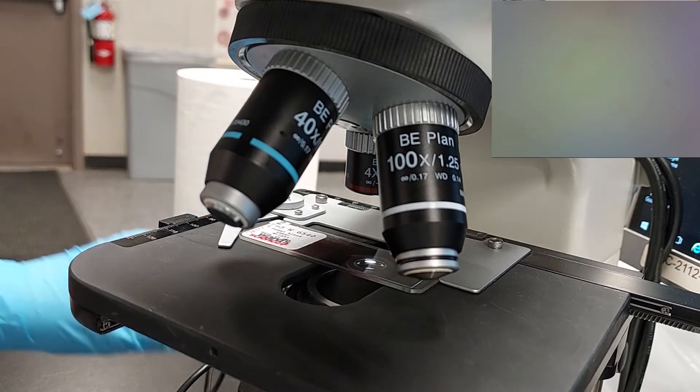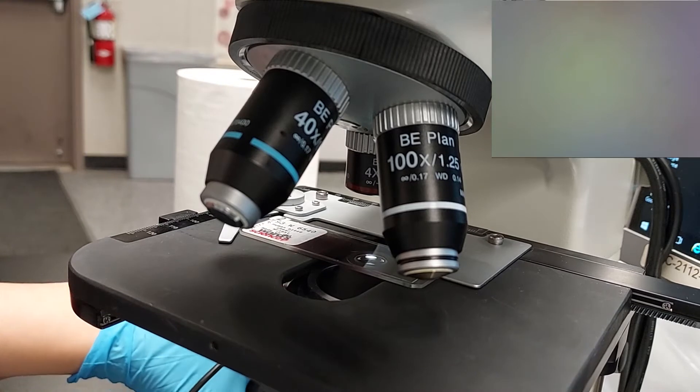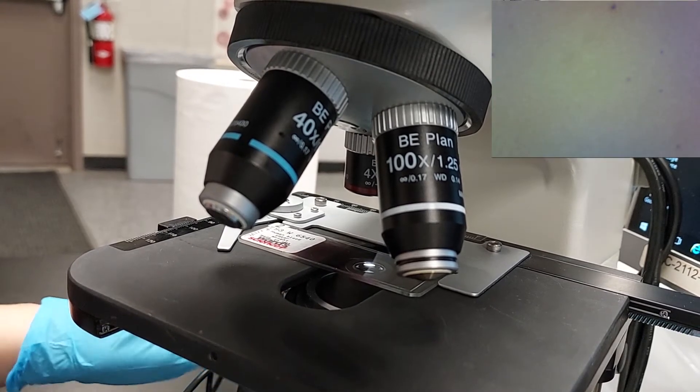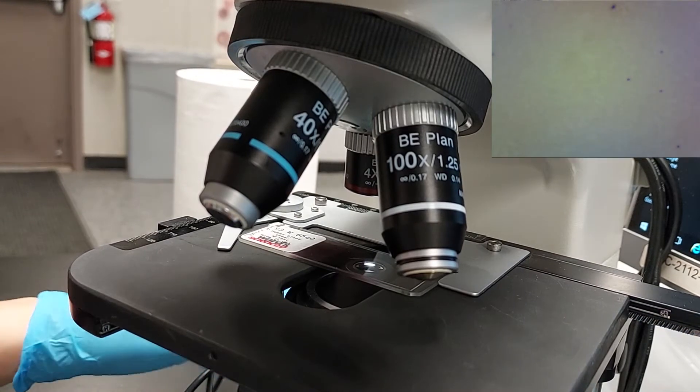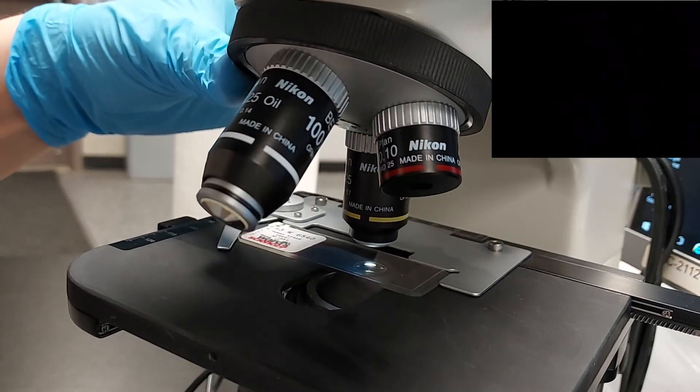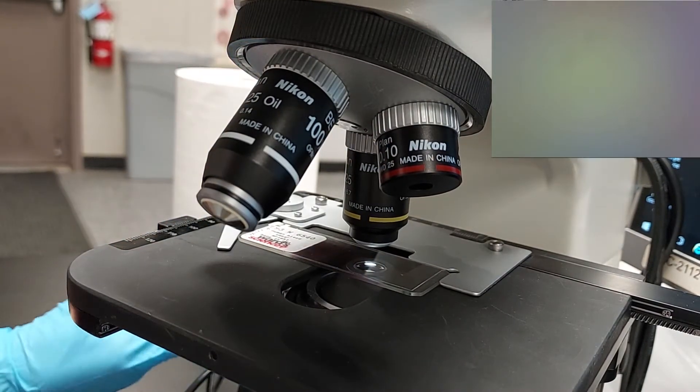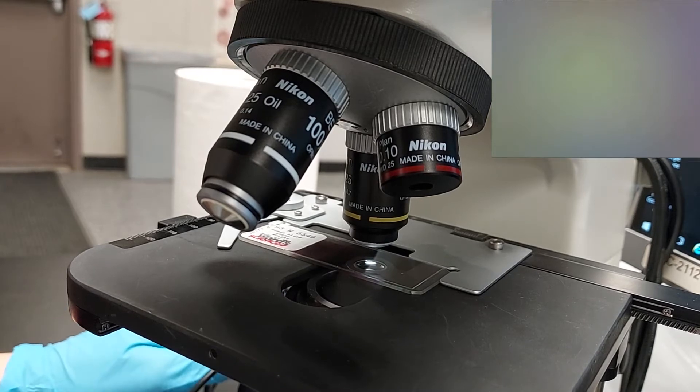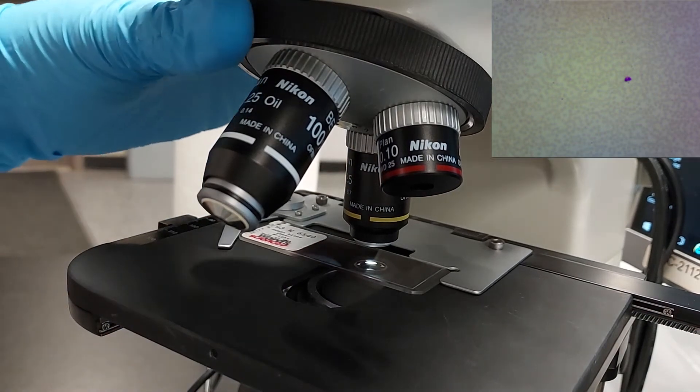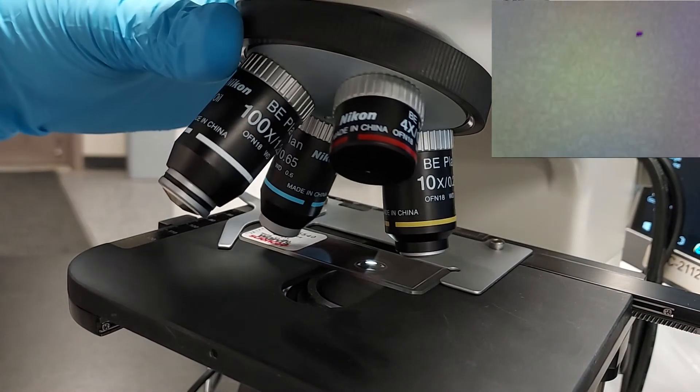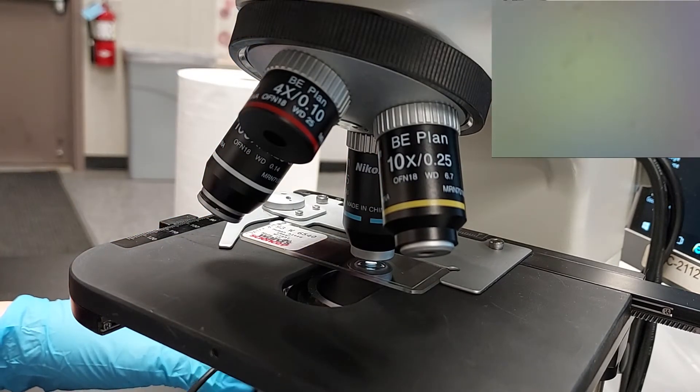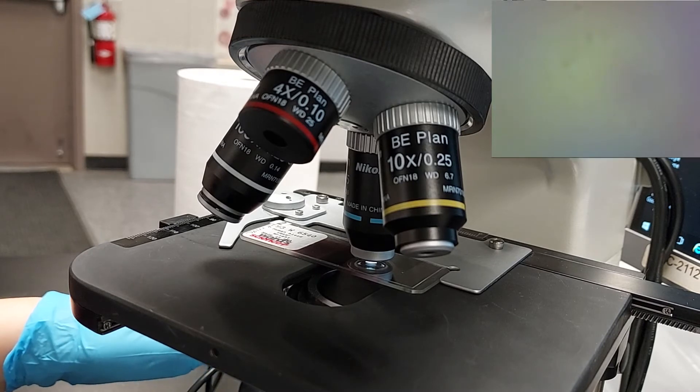The first thing is you're going to find your specimen in focus on red, as you can see it right here. Now I'm going to rotate to the 100, which is the yellow. I should only be fine focusing from here on in. I'm seeing a little eosinophil in there. Now I'm going to rotate to the blue, which is the 400 total magnification, and I should only have to fine focus from here.